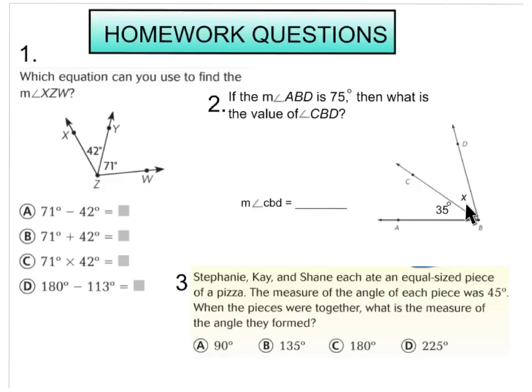And number three says this. Stephanie, Kay, and Shane each ate an equal size piece of pizza. The measure of the angle of each piece was 45 degrees. When the pieces were together, what is the measure of the angle they formed? So remember, they each ate an equal size piece of pizza, and the measure of each piece was 45 degrees. Remember to ask yourself how many people are eating, and then when you find out if they stuck all their pieces of pizza together, what would be the angle that they formed? And your choice would be A, 90 degrees, B, 135 degrees, C, 180 degrees, or D, 225 degrees.